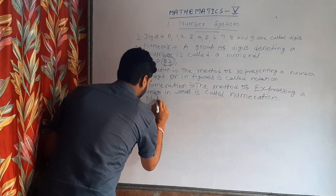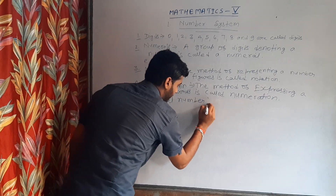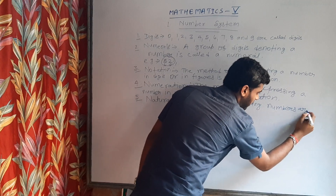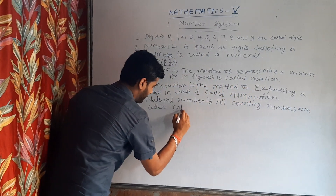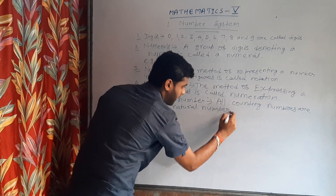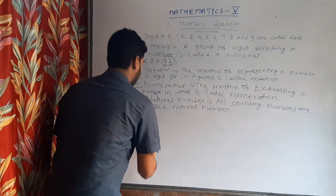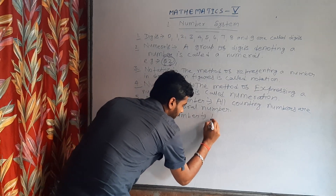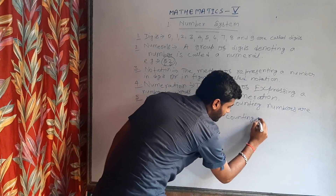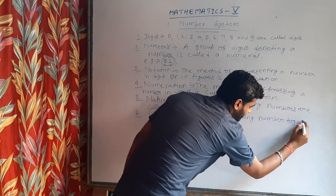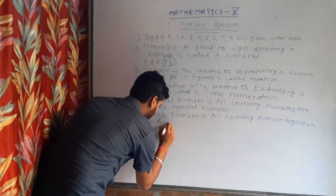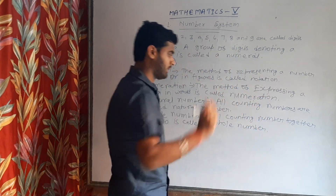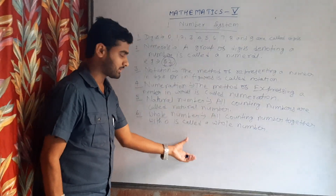Fifth: natural numbers. All counting numbers are called natural numbers. जितने भी गिनती की संख्या हैं, उन्हें हम natural numbers कहते हैं। Whole numbers — all counting numbers with zero are called whole numbers. गिनती की संख्याओं में zero को मिला देने पर जो संख्या होती है, वो whole numbers कहलाती है।